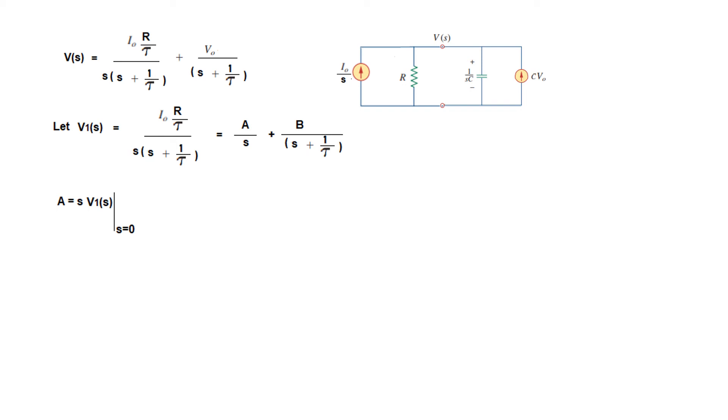A is found where s equals 0. s multiplied by V1(s) cancels the s term, so putting s equals 0, the denominator becomes 1 over tau, and solving we get A equals I0R.